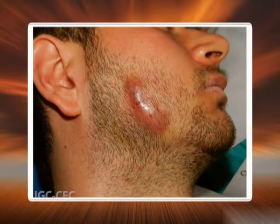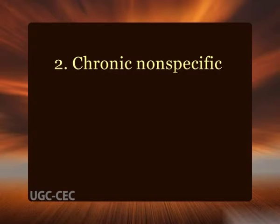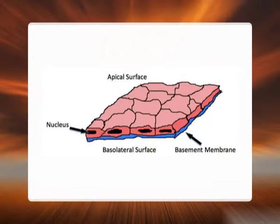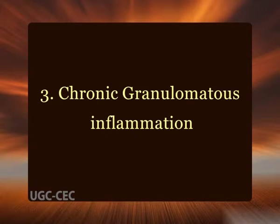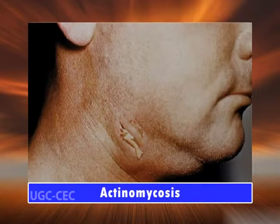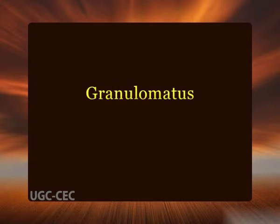A variant of chronic non-specific interstitial inflammation is chronic suppurative inflammation, in which infiltration by polymorphs and abscess formation are additional features — for example, actinomycosis. The inflammatory cell infiltration consists of lymphocytes, monocytes, plasma cells, eosinophils, and other cells. Another type is chronic non-specific interstitial inflammation with formation of polyps and condylomas, occurring on mucous membranes. The third type is chronic granulomatous inflammation, characterized by formation of granulomas — for example, tuberculosis, leprosy, syphilis, actinomycosis, and sarcoidosis.